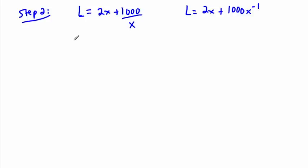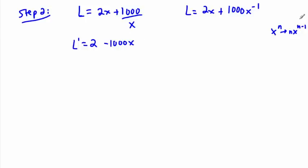Now I can find L prime using the power rule: the derivative of xⁿ is n·xⁿ⁻¹. The derivative of 2x gives 2, and the derivative of 1000·x⁻¹ gives −1000·x⁻², which is the same as −1000/x². So L prime equals 2 − 1000/x².